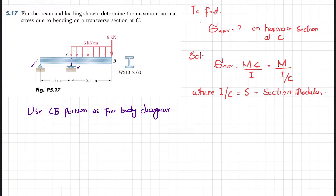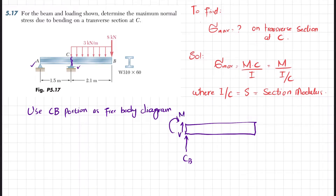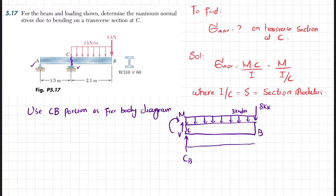Drawing the CB portion: at the cut section C, there will be a shear force V and a reaction moment M. At point B there is a load of 8 kN, and from C to B there is a uniformly distributed load of 3 kN/m. The distance from C to B is 2.1 meters.